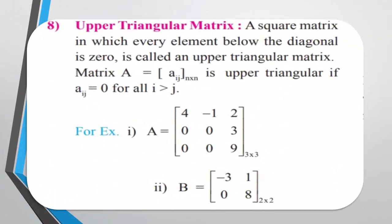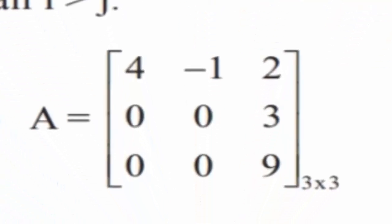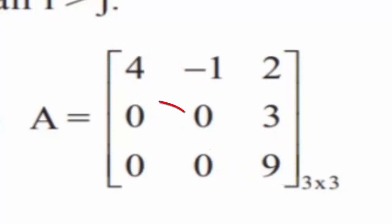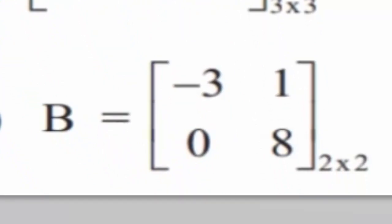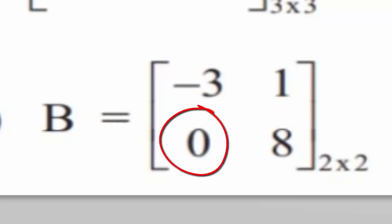Upper Triangular Matrix: A square matrix in which every element below the diagonal is 0 is called an upper triangular matrix. For matrix A with elements Aij of order m by n, it is upper triangular if Aij equals 0 for all i greater than j, that is where the row number is greater than the column number. For example, in matrix A the diagonal elements are 4, 0, 9 and all elements below the diagonal are 0. In matrix B the diagonal elements are −3 and 8, and the element below the diagonal is 0.